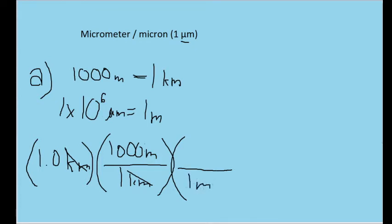We'll add one meter in the denominator so it cancels out. And the conversion factor from meters to microns is this number right here, where there are a million microns in a meter. So we'll add this up top.